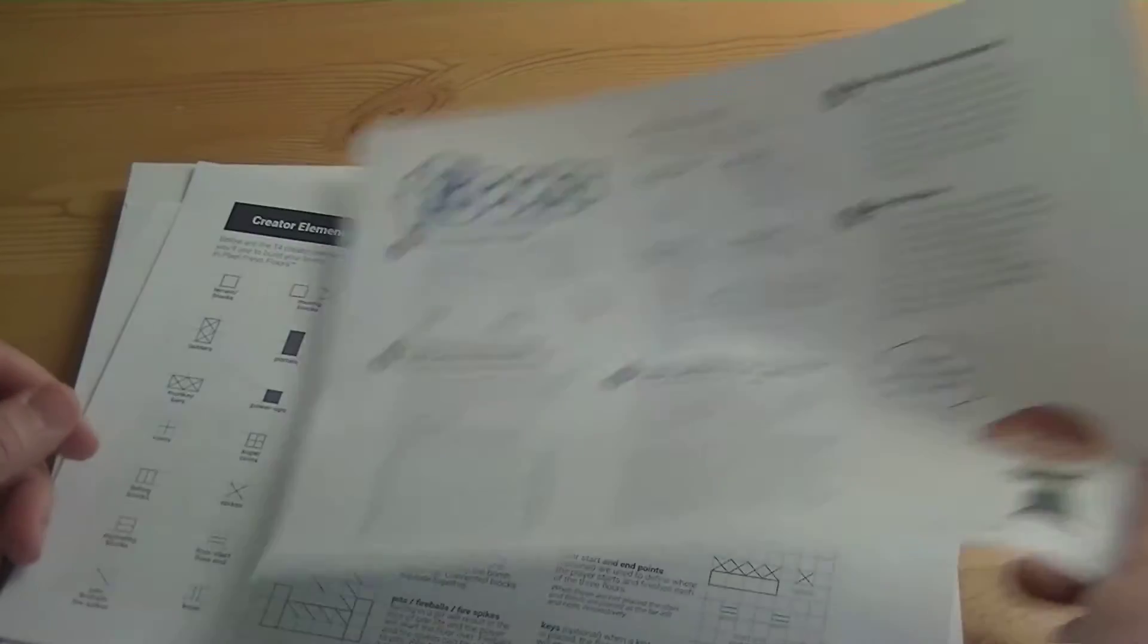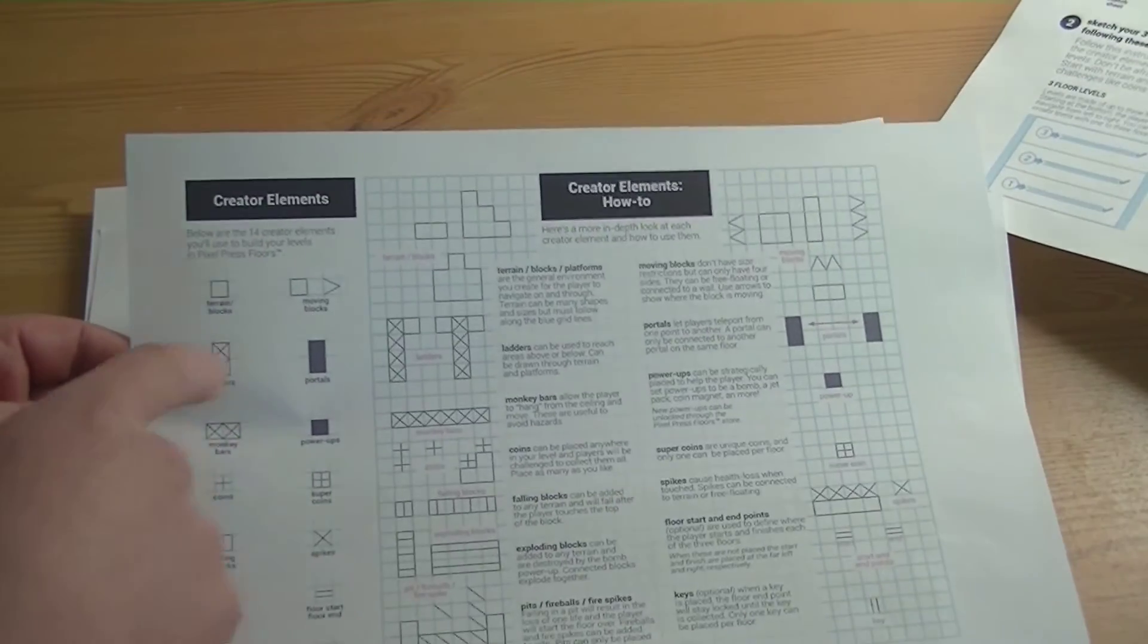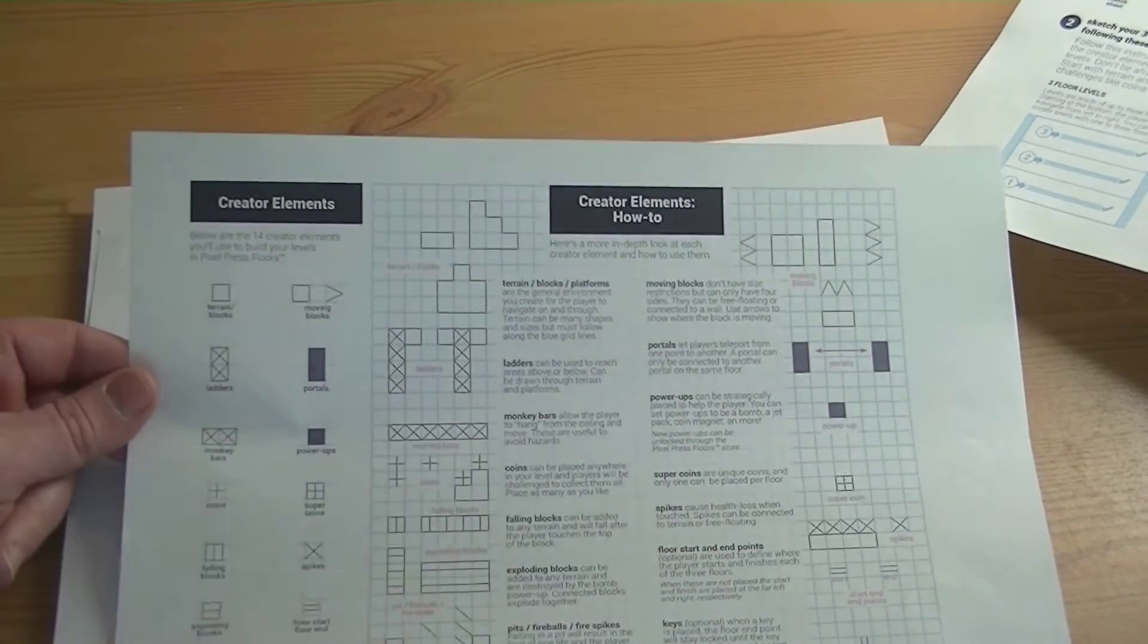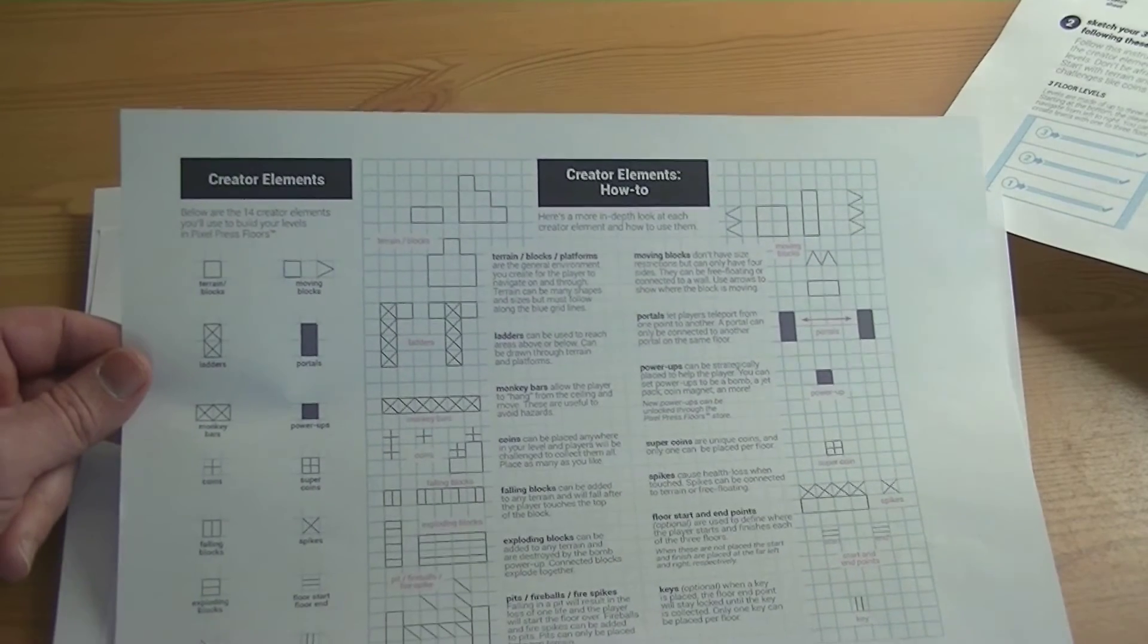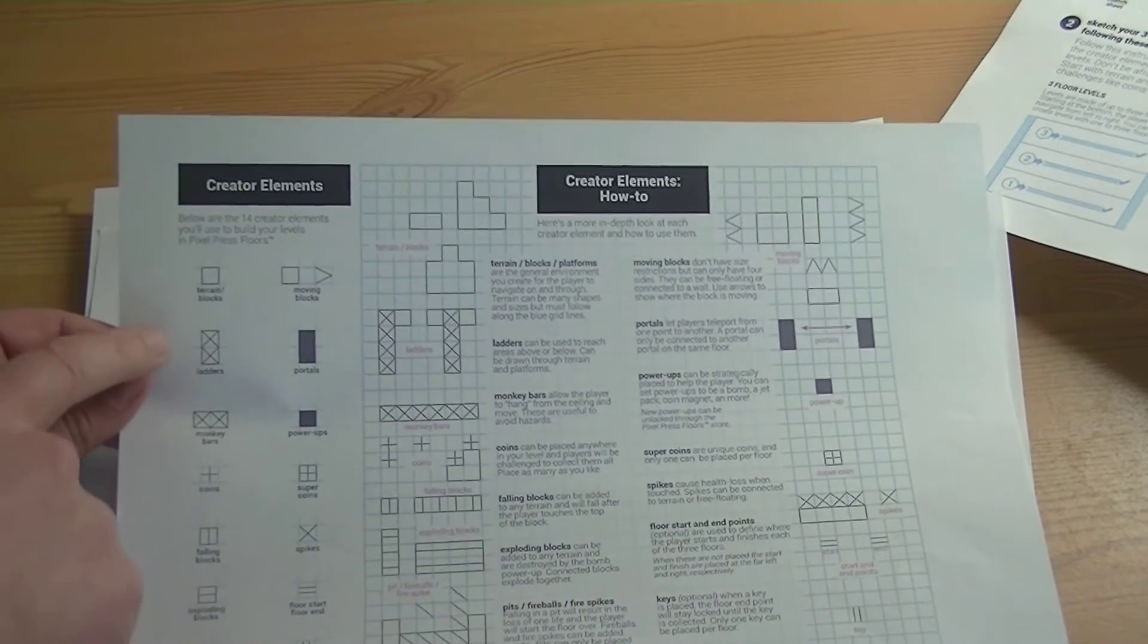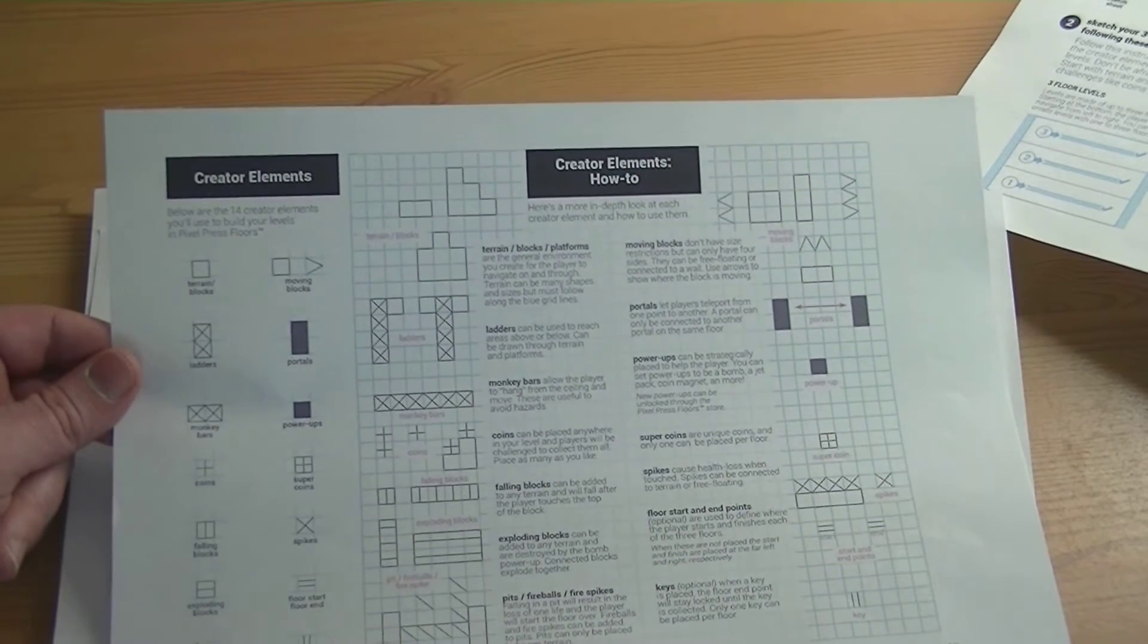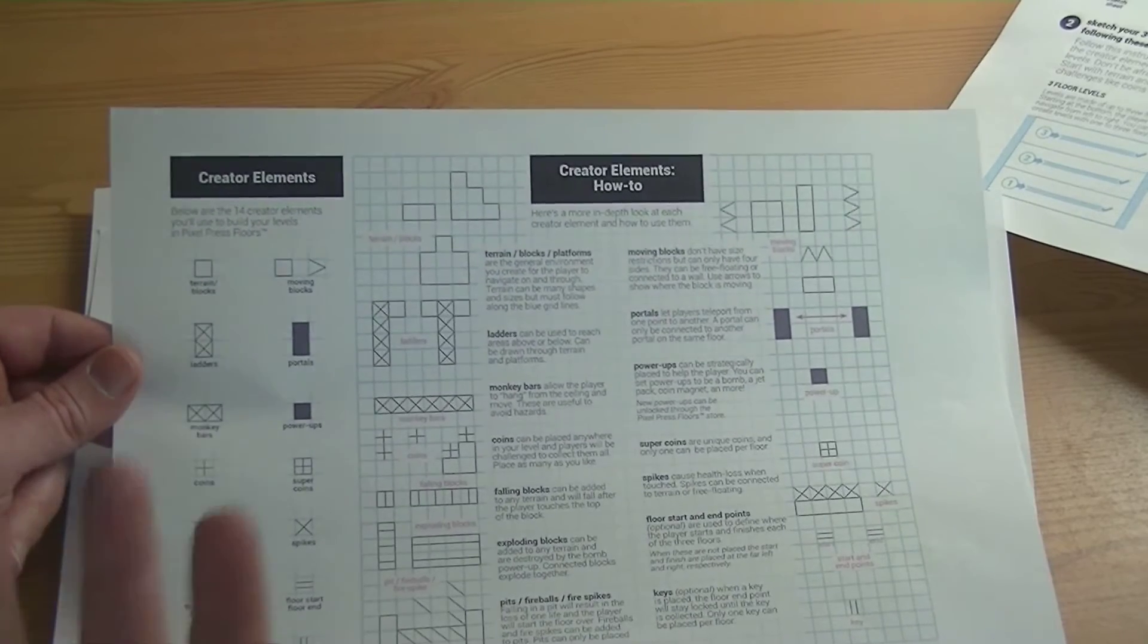It has all the different creator elements. You have things like terrain blocks, which can be any type of shape, and that's your general how you move around and what your levels are going to look like. Then you have things like ladders, monkey bars, coins, falling blocks, exploding blocks, pits, spikes, you can make lava pits, all sorts of stuff.